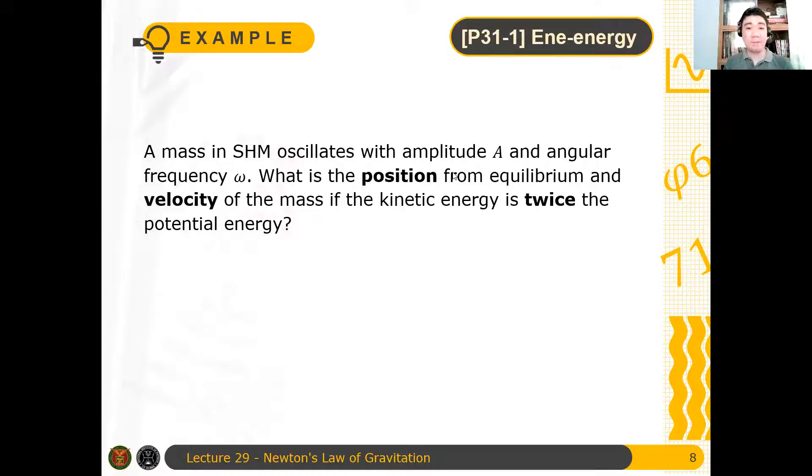Okay, so for example, we have a mass in simple harmonic motion that is oscillating with amplitude A and angular frequency omega. What is the position from equilibrium and velocity of the mass if the kinetic energy is twice the potential energy?